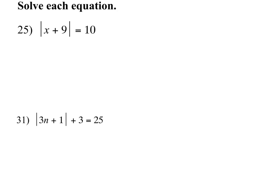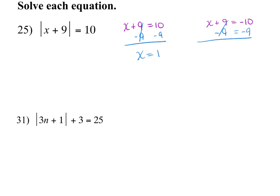For absolute value, you have to make sure the absolute value is by itself, then you're going to set up two equations. Here, the absolute value of x plus 9 is by itself — nothing is being added, subtracted, multiplied, or dividing on the outside — so we set up two equations: x plus 9 equals 10, and x plus 9 equals negative 10. Subtract 9 from both sides on each. For the first, x equals 1. For the second, x equals negative 19. Both of these are your answers.